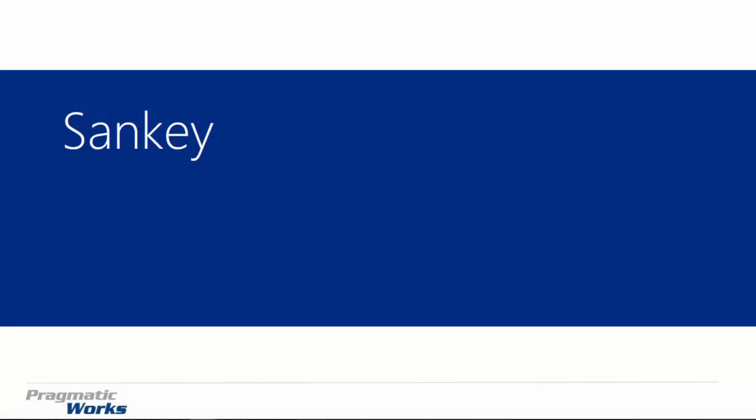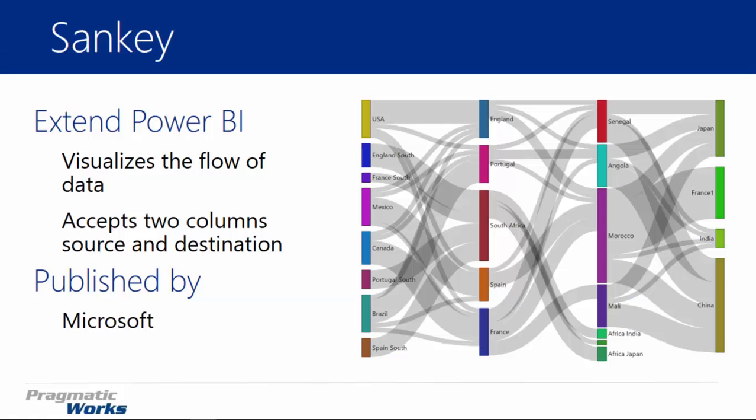Welcome back to the Power BI Custom Visuals course. In this module we're going to be looking at the Sankey Diagram. The Sankey Diagram is really a type of flow diagram that shows values being moved from one item to another. It typically accepts two main columns, which is your source and destination, and then a third column can be the measure that's really measuring the size or the amount of values that have moved from one section to another.